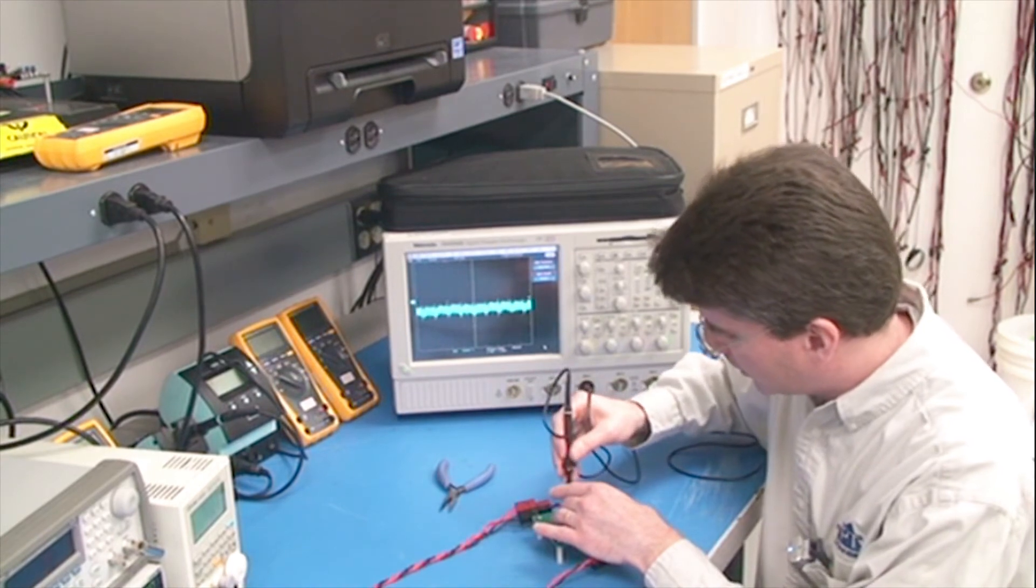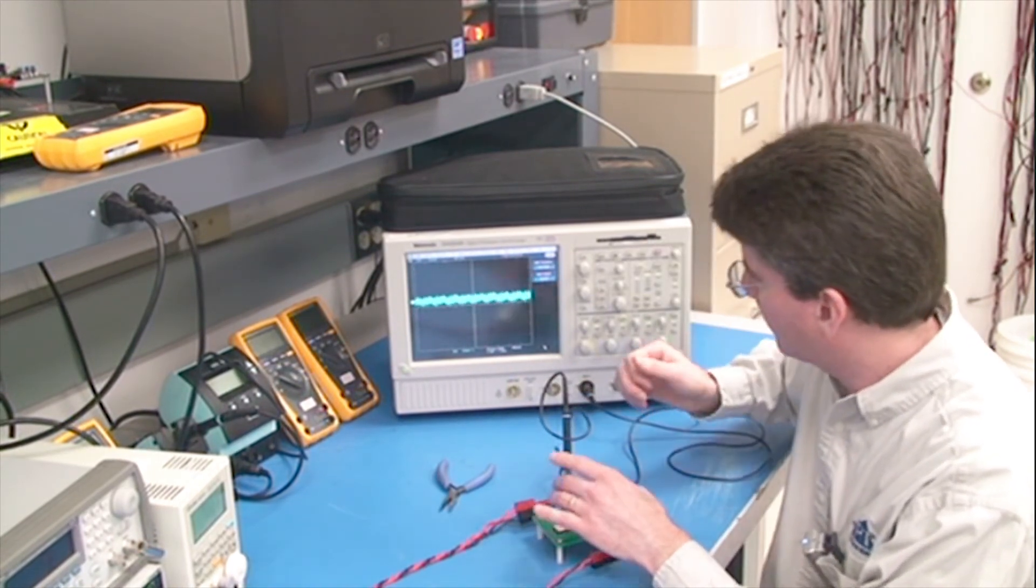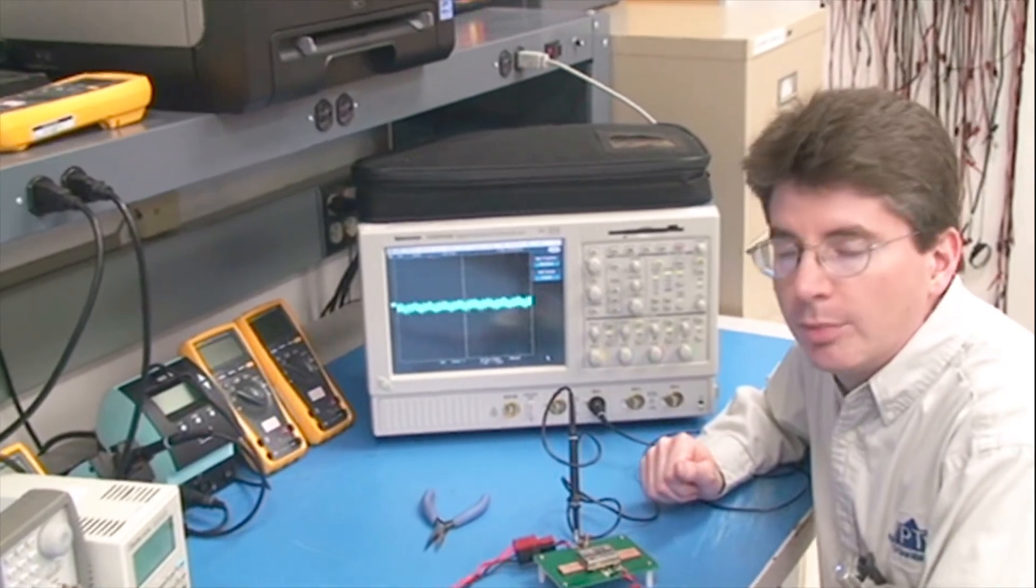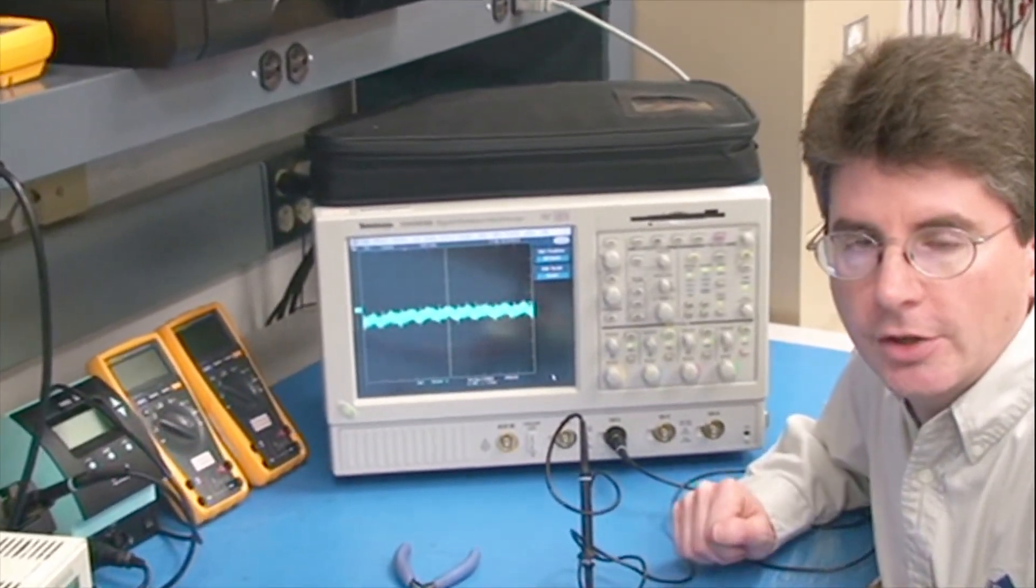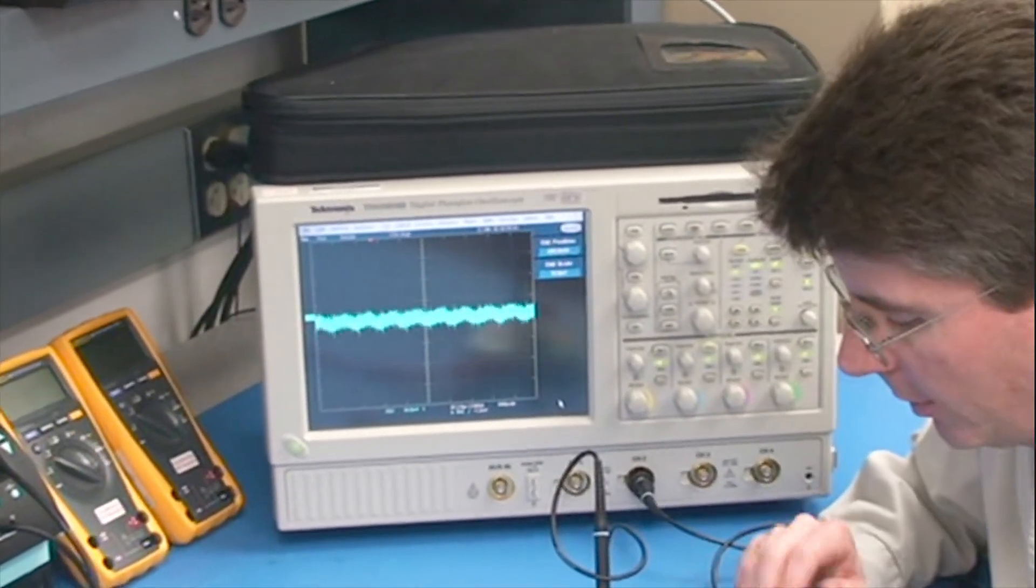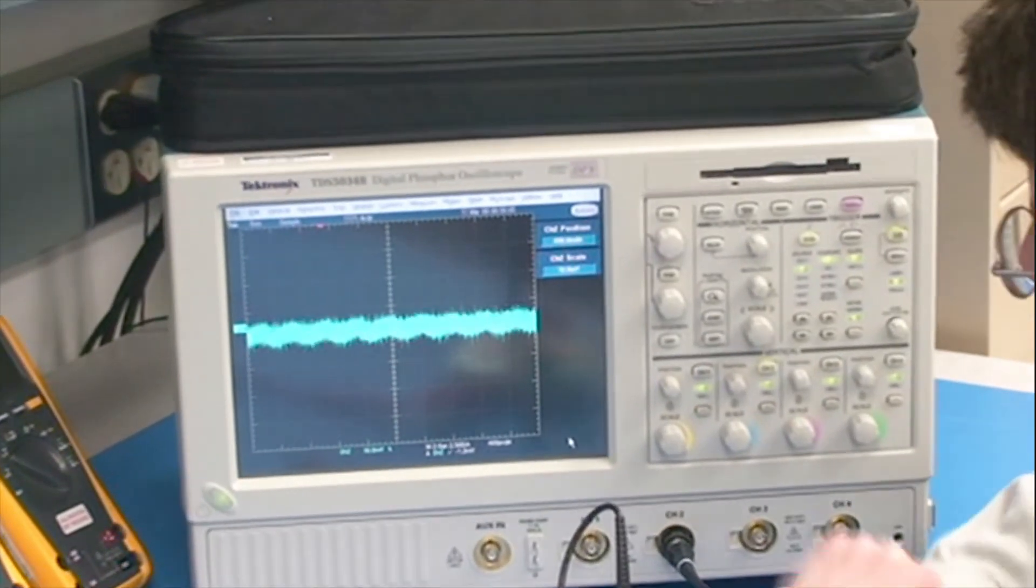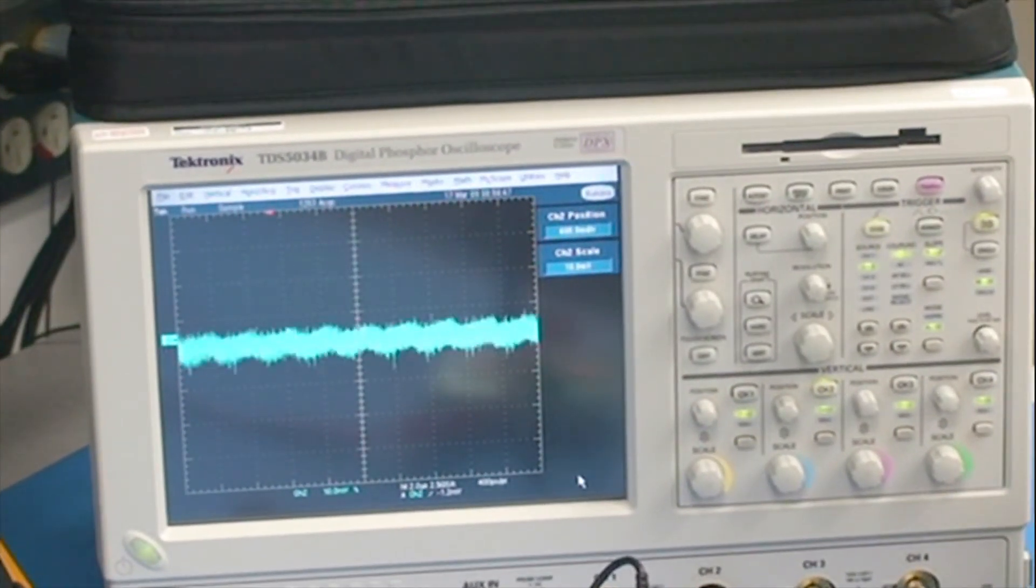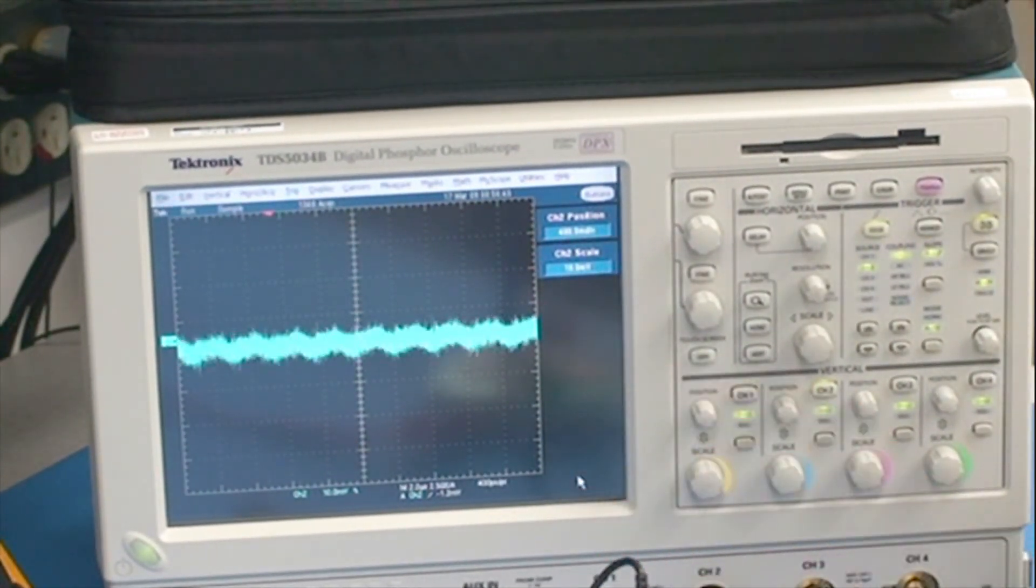We'll move the oscilloscope probe to measure that. Now we're looking at the output ripple with a low ESR ceramic capacitor. We have 20 microfarads added to the output. Again, this is full bandwidth on the oscilloscope, and you can see that we are about 10 millivolts peak-to-peak.